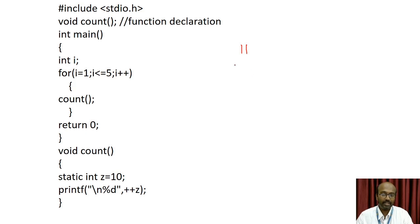Since z retains the value 11 and is incremented, the value becomes 12 and 12 is printed. Next, i is incremented to 3 — the condition is true, the function is called again. The value of z is now 12, it is incremented to 13, and 13 is printed. This happens again for i equal to 4 and i equal to 5, printing the values 14 and 15.